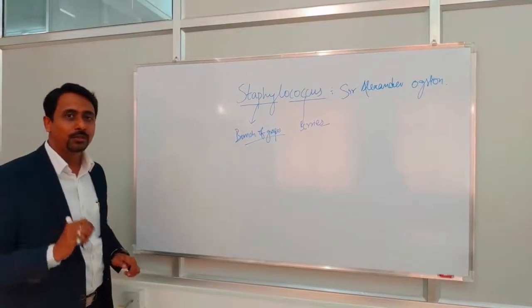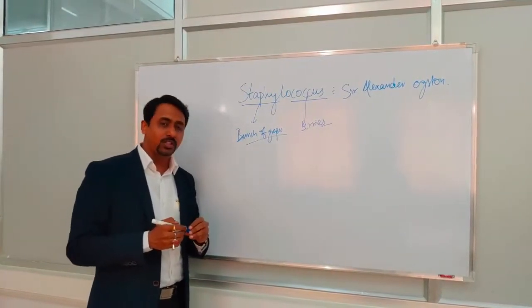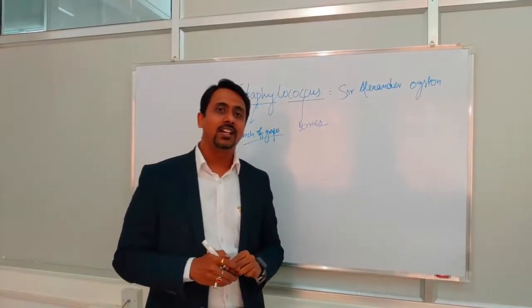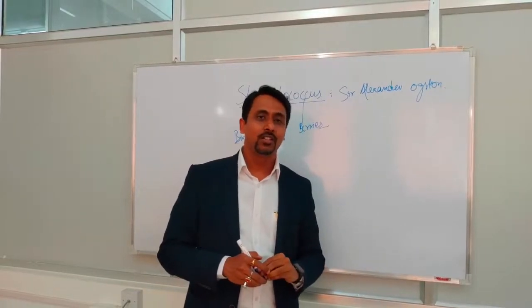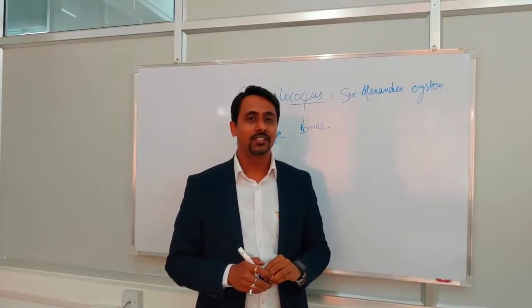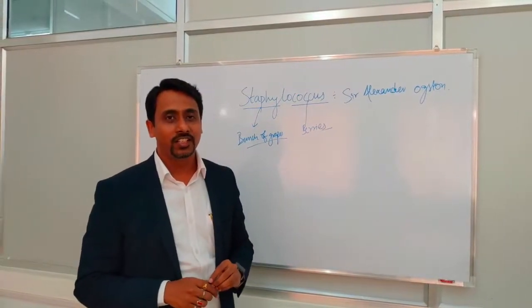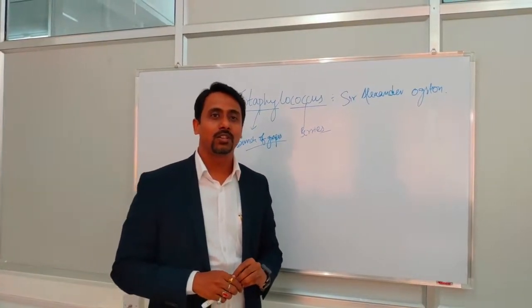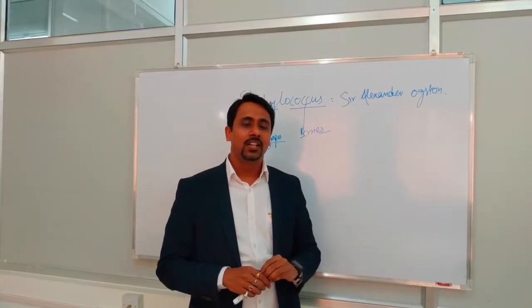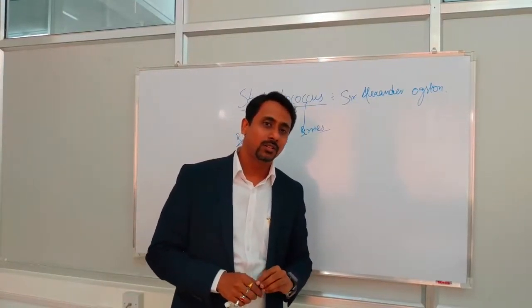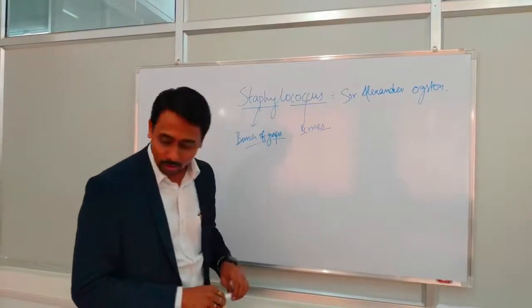In Staphylococcus there are two important species: Staphylococcus aureus and Staphylococcus epidermidis. Today I am going to discuss in detail about Staphylococcus aureus and briefly about other Staphylococci.